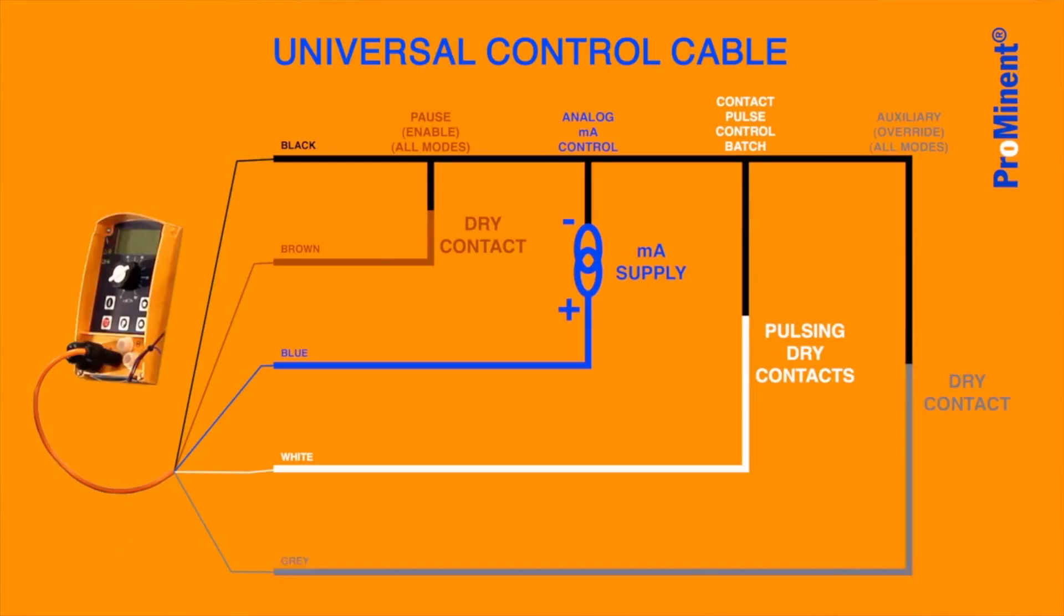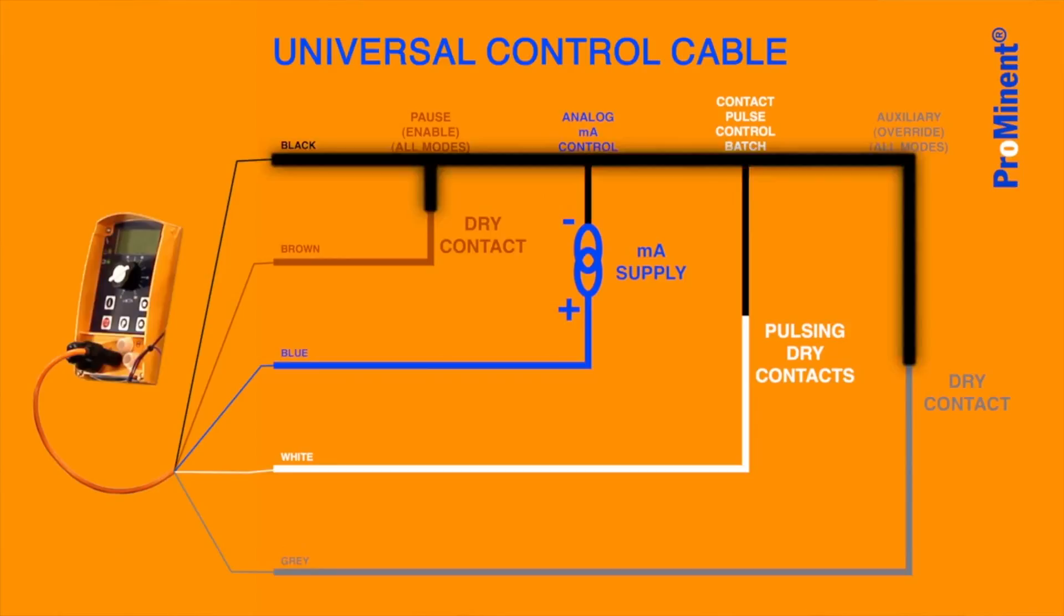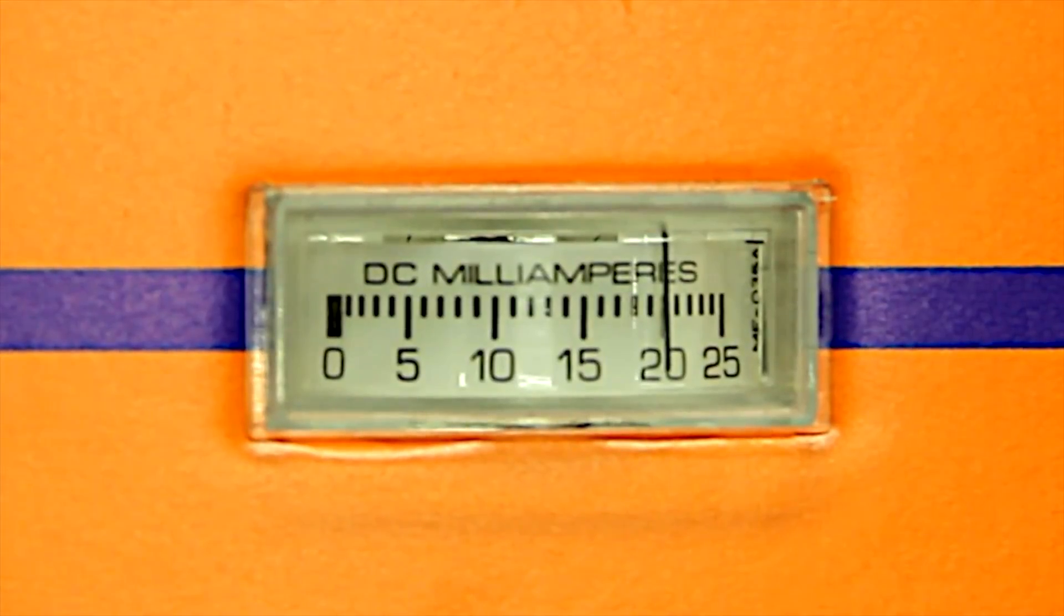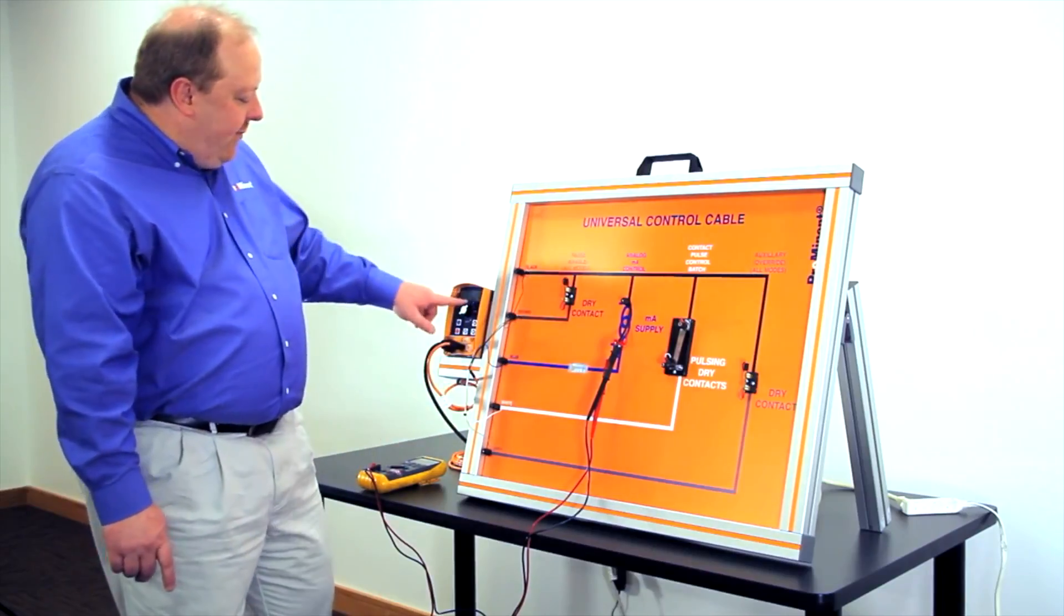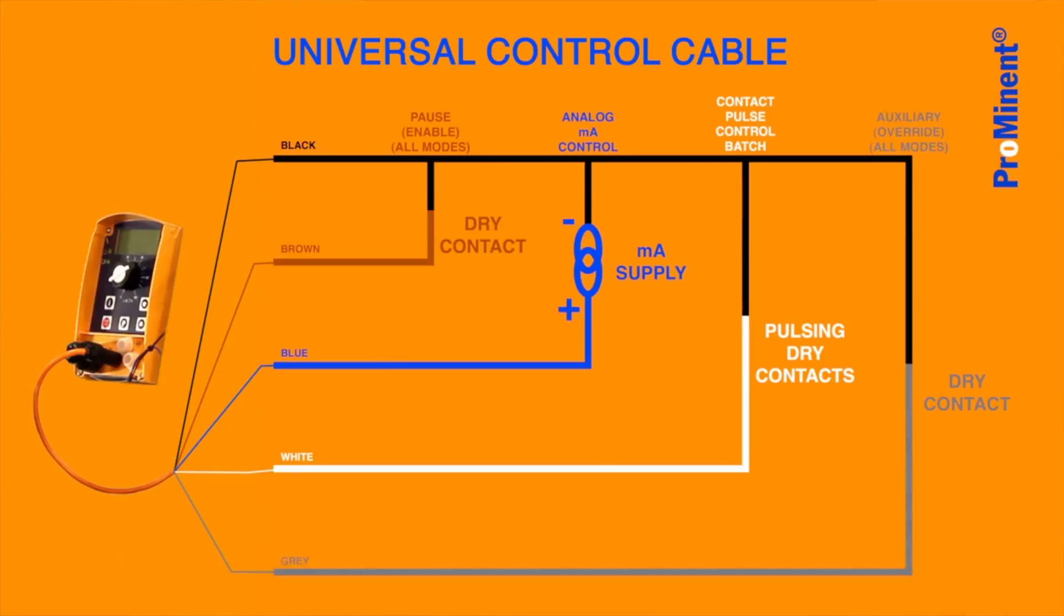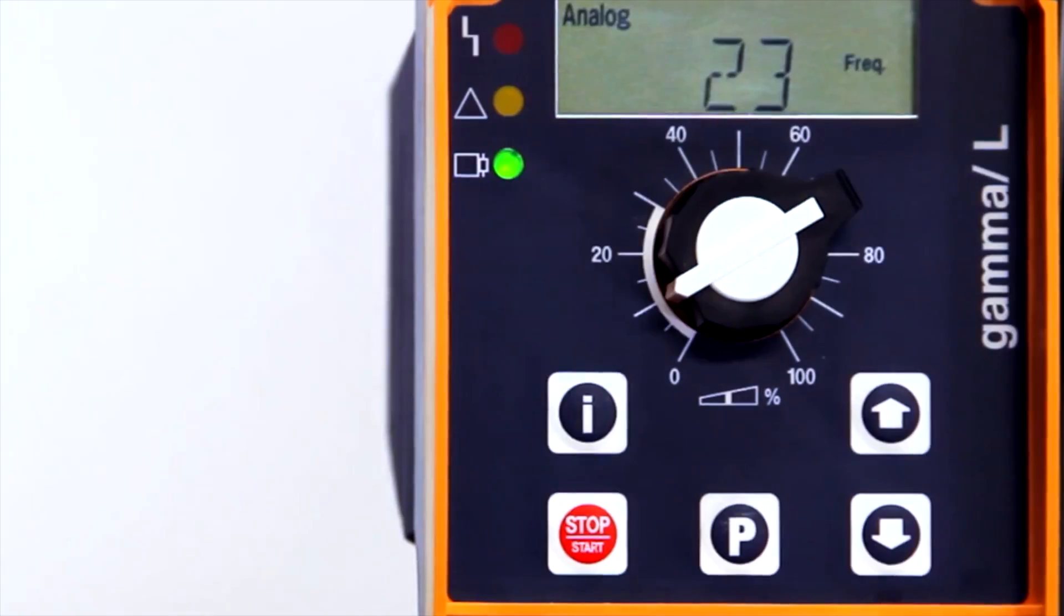When we short the gray wire here to the black wire, which again is made to the brown wire, it's going to override our current signal, which is telling the pump to run at its maximum speed, and we run at this predetermined frequency. Here we predetermined that we wanted, once the gray wire is made to the black wire through again a dry contact, we want the pump to run at 23 strokes per minute.